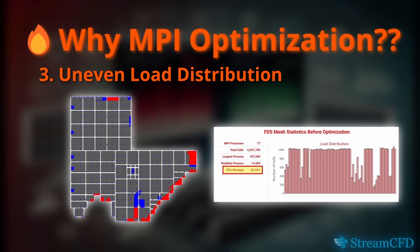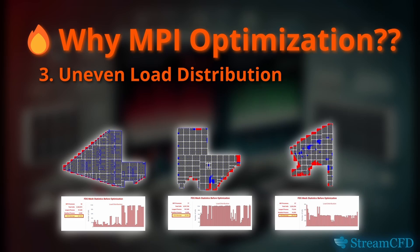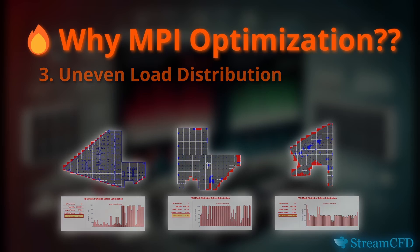This is another geometry with similar problems — 20% wastage of resources. Another geometry shows nearly 50% wastage. These numbers can vary with different orientations or meshing approaches, but there will always be a wastage of resources associated with simulating complex geometries.